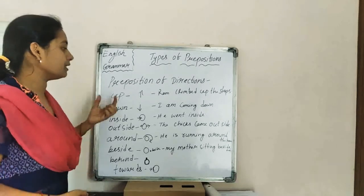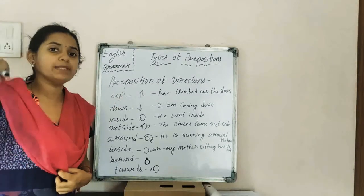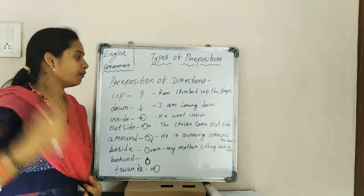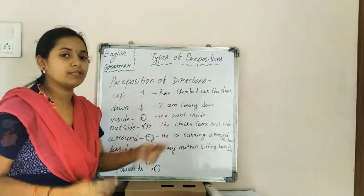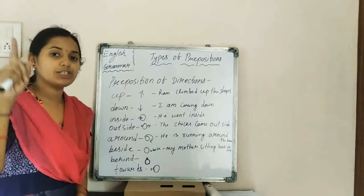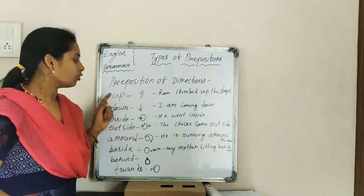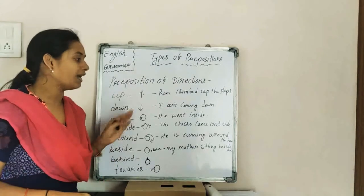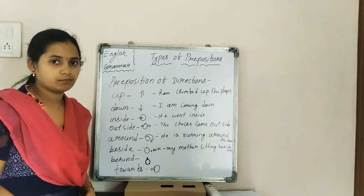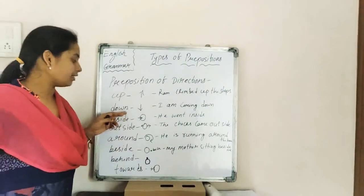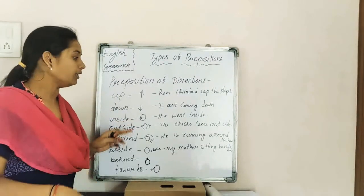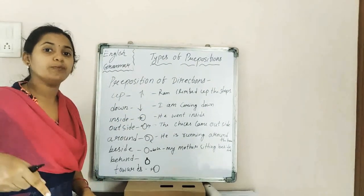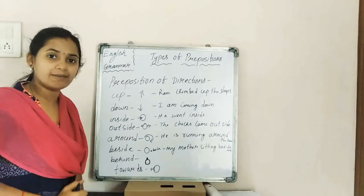The first is 'up' — the direction is upward. For example, Ram climbed up the steps. The direction here is up. Next is 'down' — I am coming down. When the direction of movement is downward, we use 'down.'